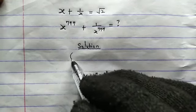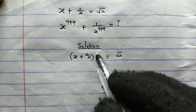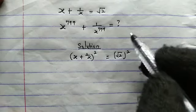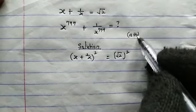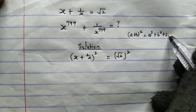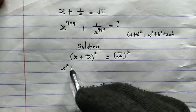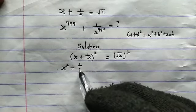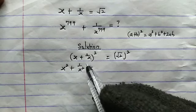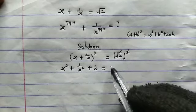From the given equation, x plus 1 over x equals root 2. Let's go ahead and square both sides. From the left, we'll make use of the property: a plus b squared equals a squared plus b squared plus 2 times a times b. So the first term squared gives us x squared, plus the second term squared gives us 1 over x squared, plus 2 times x times 1 over x, which is 1. So 2 times 1 gives us 2. From the right, squaring cancels the root sign, giving us 2.